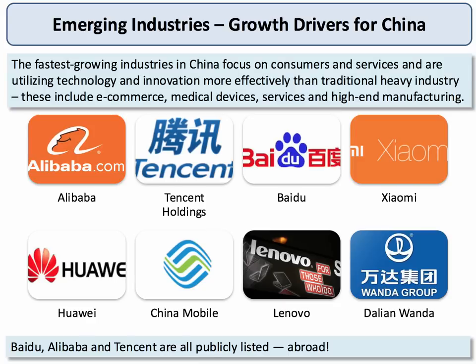What's interesting in terms of reform is the growth of the private sector and in particular the emergence of globally scaled, globally branded businesses. Here are eight: Alibaba, Tencent, Baidu, Xiaomi, Huawei, China Mobile, Lenovo, and Dalian Wanda. These are global businesses now with a global reach. Indeed, Baidu, Alibaba and Tencent are all listed on stock markets overseas. Tencent had 30,000 employees, mostly based in Shenzhen. These are significant emerging businesses in China with a global reach, and it's a key part of their growth and reform story.